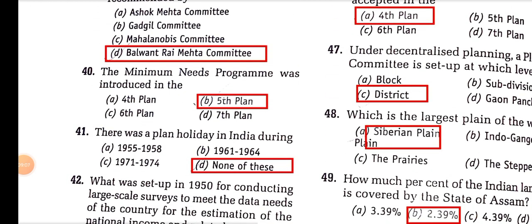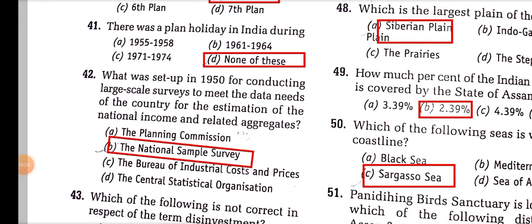The minimum needs programme was introduced in the 5th plan. There was a plan holiday in India between 1966 and 1969. The National Sample Survey Organization was set up in 1950 to conduct large-scale surveys for national income estimation. The Planning Commission was established in 1951, as was the Central Statistical Organization (CSO).